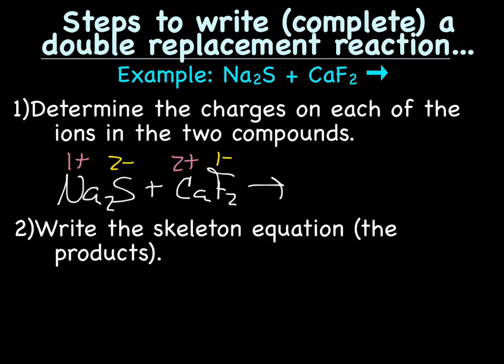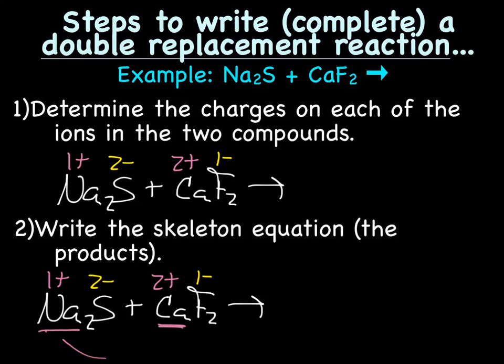So, the next thing you need to do is write the skeleton equation. So, let's write the products. Not worrying about balancing or anything. Just write the products. And, what's going to happen here is the two positives are going to switch places. So, we're going to end up with Ca is now going to hook up with S. And, Ca has a 2 plus. S has a 2 minus. And, sodium is now going to hook up with fluorine. Sodium is 1 plus. And, fluorine is 1 minus.